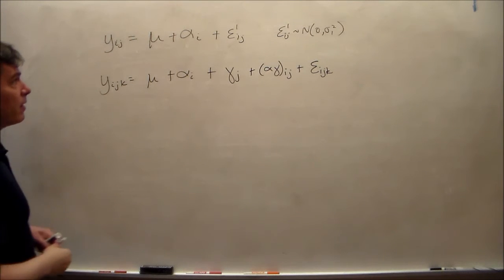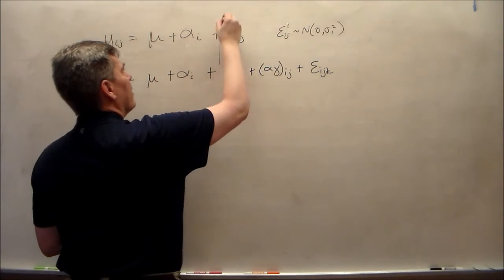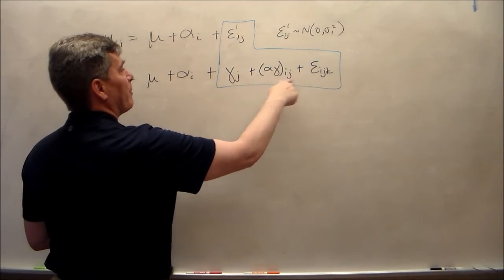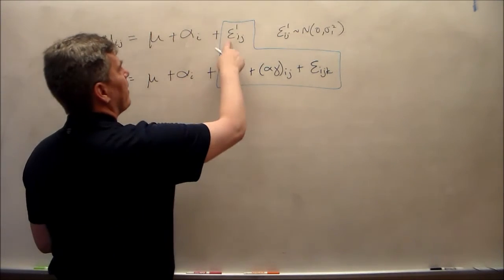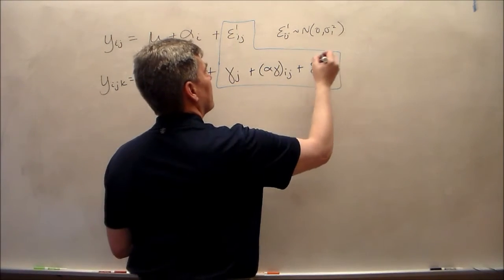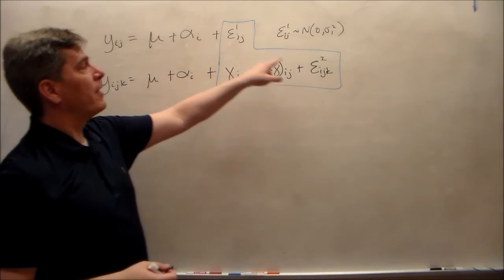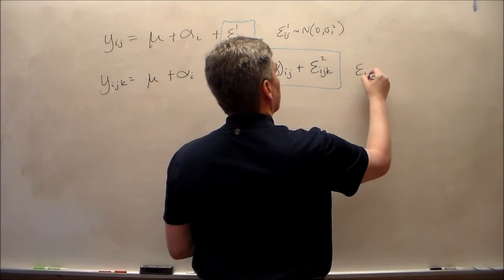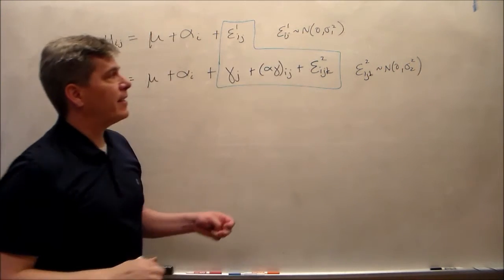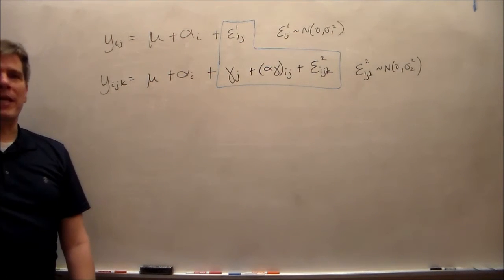And again, in that video, I emphasized that the mus were the same, the alphas were the same, because these are population effects, which meant that the epsilons ij1s were divided up into these three parts, which meant that this epsilon ij1 had to be larger. Had to, the variances had to be larger than the epsilon ij2s. That is, that the sigma squared 2 would be less than the sigma squared 1. And we liked that because the smaller sigma squared gives us a higher power test.